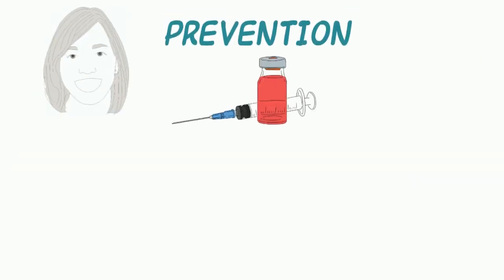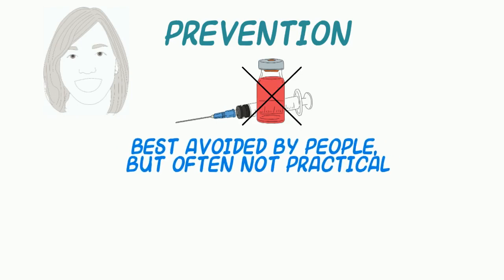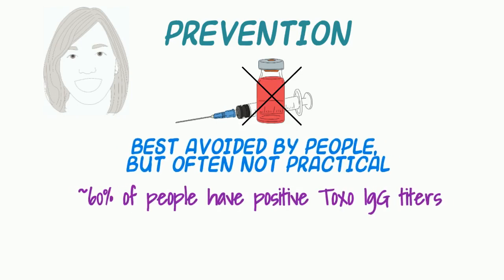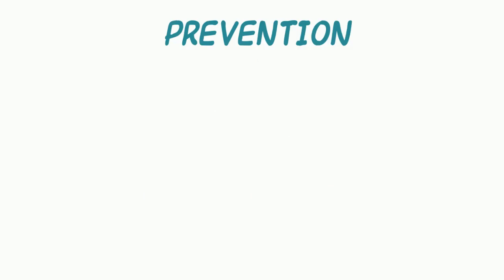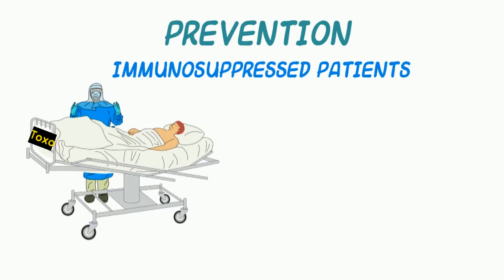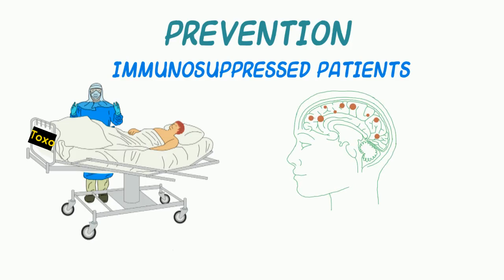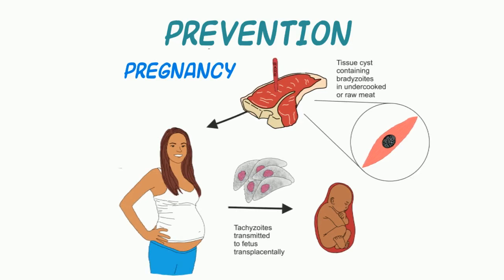There is no vaccine for toxo in humans or animals. Obviously, as a zoonosis, it is a disease best avoided. But in some parts of the world this seems quite difficult — as many as 60% of the human population has positive IgG titers. The real concern lies with immunosuppressed individuals, as reduction of immunity can lead to the release of tachyzoites from tissue cysts. If such cysts are in the brain, meningoencephalitis can occur. If a similar process occurs in a pregnant woman, tachyzoites can move across the placenta and cause birth defects in the baby.